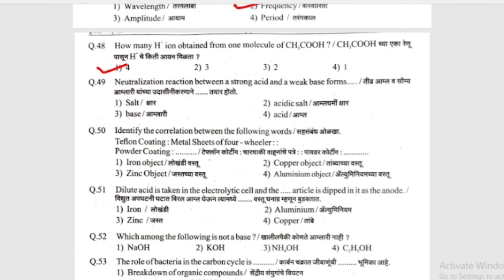Neutralization reaction between a strong acid and a weak base forms what? (Tivra amla wa saumya amlaari yanchha udasi karne timba timba tayar hotu.) Options: salt, acidic salt, basic salt, or acid. The answer is acidic salt (amla dharni kshar).